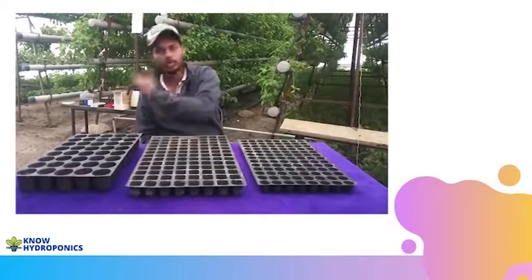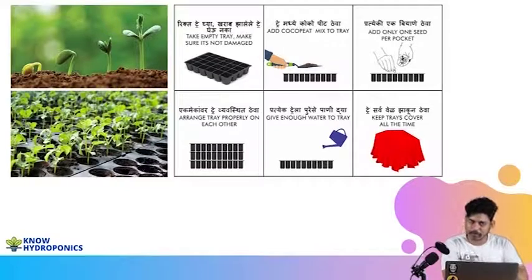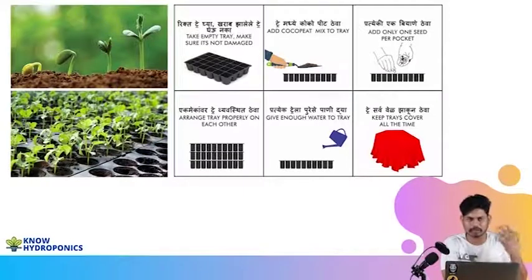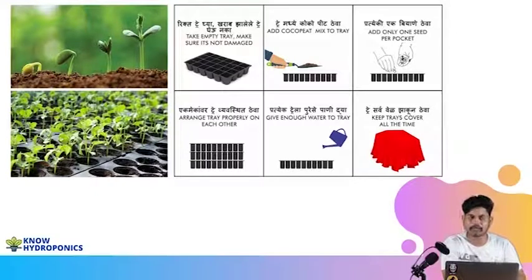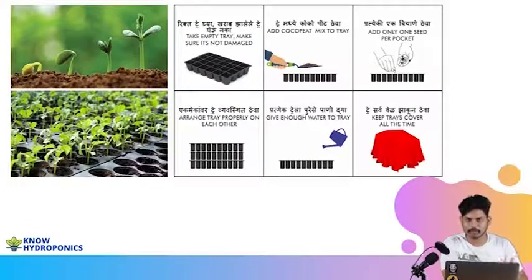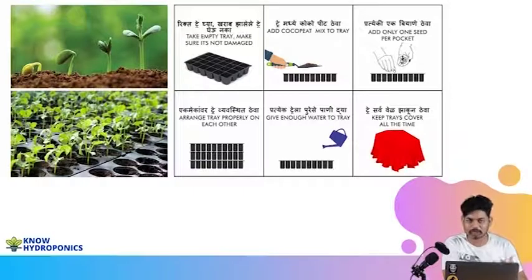The germination method starts with an empty tray. We avoid reusing trays, but if we do reuse them, we make sure they are properly washed beforehand, because there may be traces of fungus. When we water seedlings, the trays remain in a humid zone for a longer period, creating a high chance of fungus formation. So every time, either wash the tray or use a new, undamaged tray.